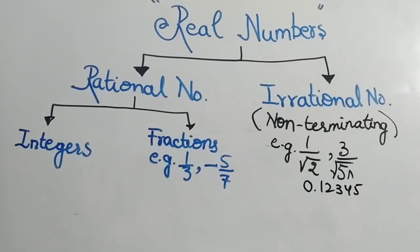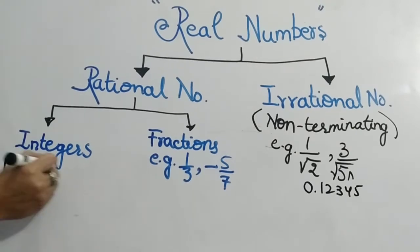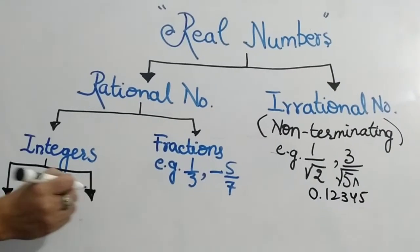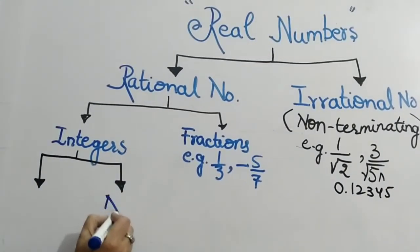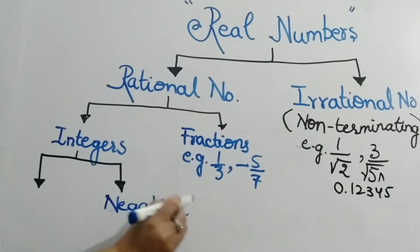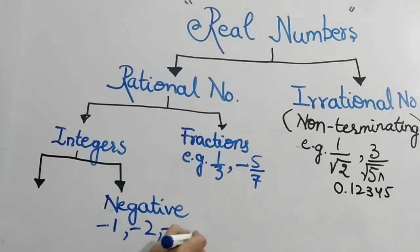There are also two categories. One is positive integers, and one is negative integers. Negative integers: minus 1, minus 2, minus 3, and so on.